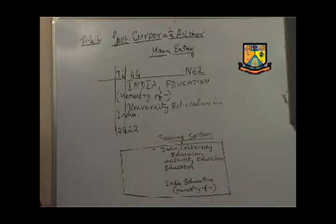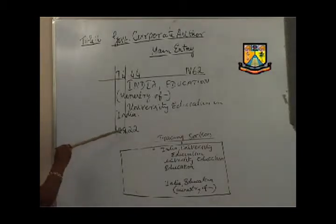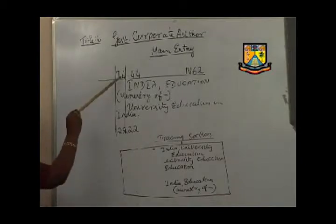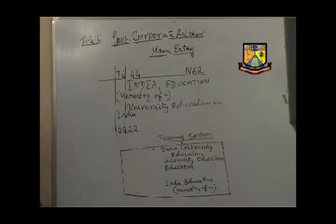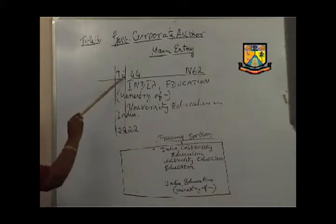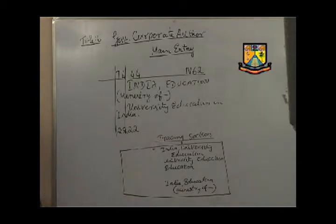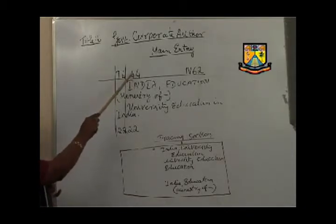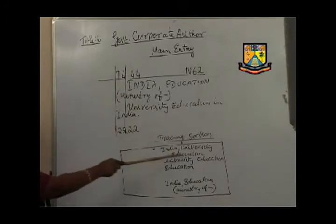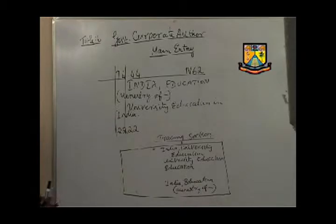The title section starts from the second vertical with continuation to the first vertical. There is no other information except the title, so the accession number is written in the bottom-most line starting from the first vertical. Now for the tracing section, we do the chain procedure for class number T4.44: T stands for main class education, 4 is taken from phase P which stands for university, dot stands for space isolate, and 44 for India — that is 4 for Asia and 44 for India. We always start from the last number of the class number.